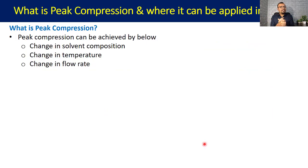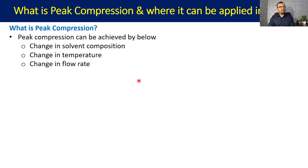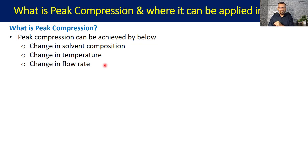So we have now learned about peak compression and how it takes place. How can one bring this phenomenon into practice? By changing the solvent composition, which is the most common approach in gradient elution. You can also achieve it with a temperature gradient or a flow rate gradient.